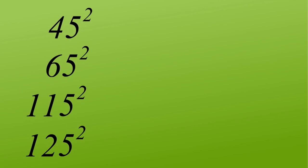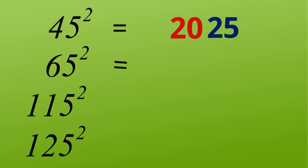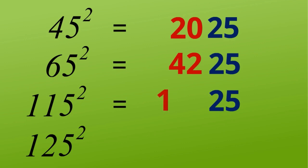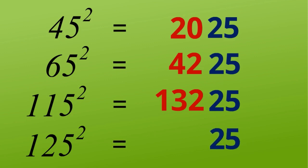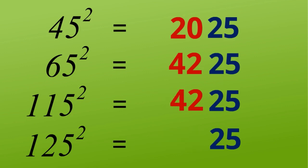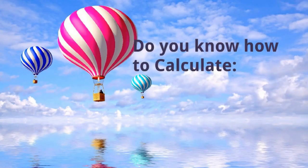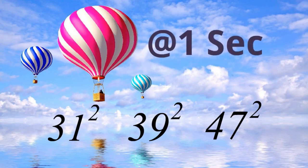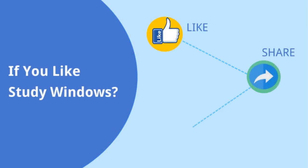For exercise, we can do 45², 65², 115², and 125² in just a few seconds. 45²: 5² is 25, and 4 multiplied by 5 is 20, so 2025. 65²: 25 and 6 multiplied by 7 is 42, so 4225. 115²: 5² is 25 and 11 multiplied by 12 is 132, so 13225. 125²: 5² is 25 and 12 multiplied by 13 is 156, so 15625.